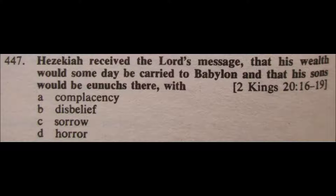Question 447: Hezekiah received the Lord's message that his wealth would someday be carried to Babylon and that his sons would be eunuchs there with: A. Complacency, B. Disbelief, C. Sorrow, or D. Horror. I remember this vaguely. I'm going to eliminate D, horror; C, sorrow; and B, disbelief. I'm going to go for A, complacency, for 447.